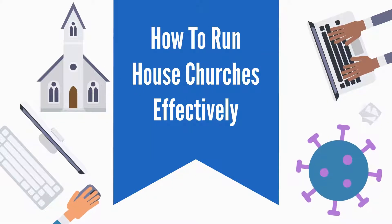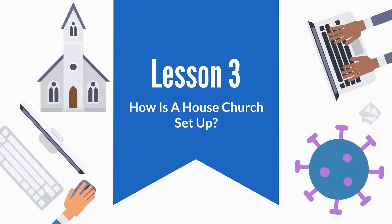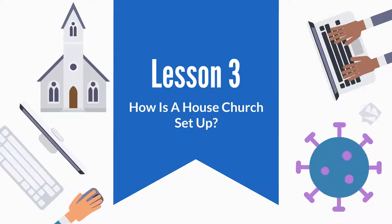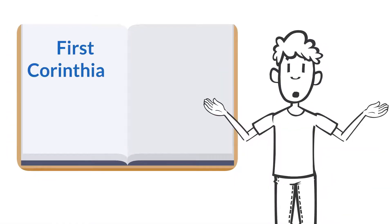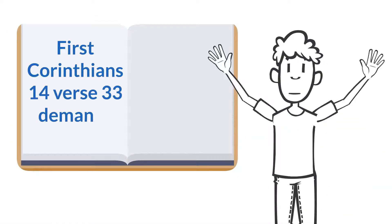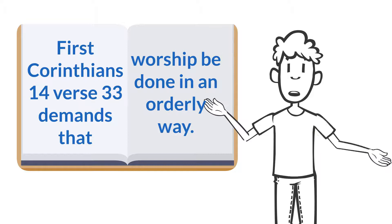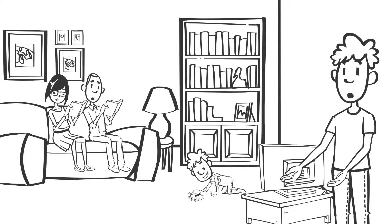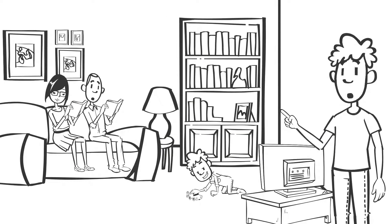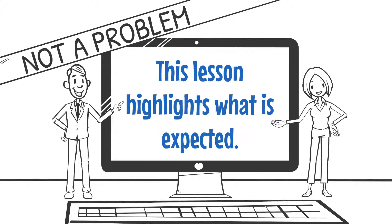How to Run House Churches Effectively, Part 1, Lesson 3: How is a house church set up? 1 Corinthians 14 verse 33 demands that worship be done in an orderly way. So how do you guarantee that your house church is properly run? Not a problem — this lesson highlights what is expected.